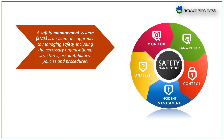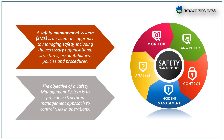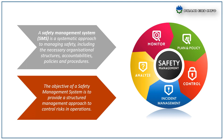A safety management system is a systematic approach to managing safety, including the necessary organization structure, accountabilities, policies and procedures. The objective of a safety management system is to provide a structured management approach to control risks in operations.